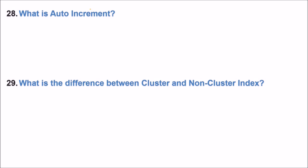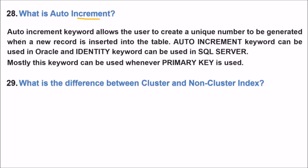Next is what is auto increment? Increment means increasing, auto means automatically. So auto increment is a keyword. This allows the user to create a unique number to be generated when a new record is inserted into the table. Whenever you are inserting a table, this may be your responsibility to add a number also, as the serial number kind of thing. But auto increment will do it for you.